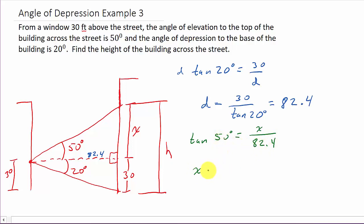And so, x, if I multiply this, that's going to be 82.4 times tangent 50 degrees. And so, bring out the calculator again. So, I get 82.4 times tangent 50. And that is 98 point, and I'm going to round it to one decimal place, 98.2.